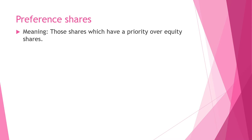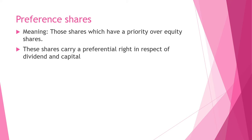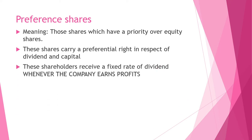Let us now understand preference shares — those shares which have a priority or preference over equity shares. These shares carry a preferential right in respect of dividend and capital: they are given dividend before the equity shareholders, and also have a preference in getting back the capital. These shareholders receive a fixed rate of dividend whenever the company earns profits, whatever be the earnings during that year.